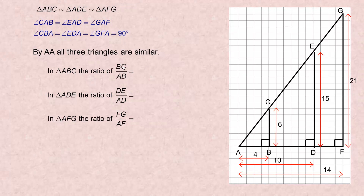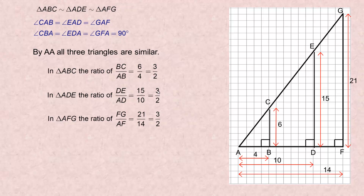In the little triangle ABC, the ratio of BC to AB would be 6 over 4. In the middle triangle, the side across from this angle would be 15 and the bottom is 10, so it would be 15 over 10. And the big one: the across side is 21 and the bottom is 14. All those ratios reduce — divide 6 over 4 by 2, top and bottom, we get 3 halves. Divide 15 over 10 by 5, we get 3 halves. And divide 21 over 14 by 7, we also get 3 over 2. And of course, 3 divided by 2 gives you 1.5. So the ratio of the vertical side across from the angle divided by the bottom is the same for all the triangles.